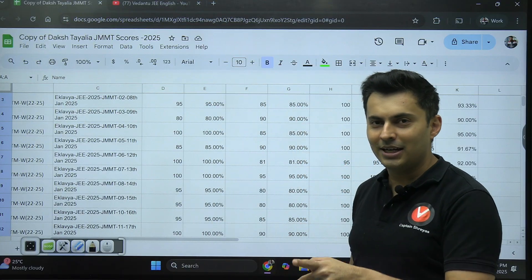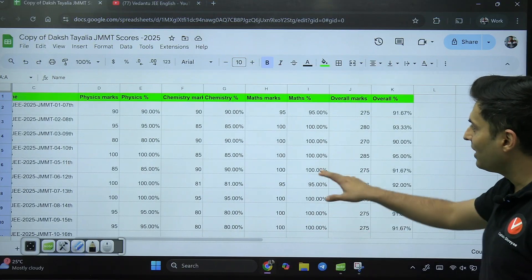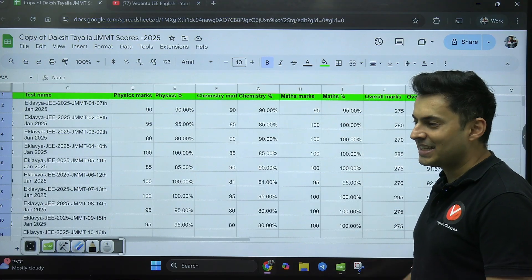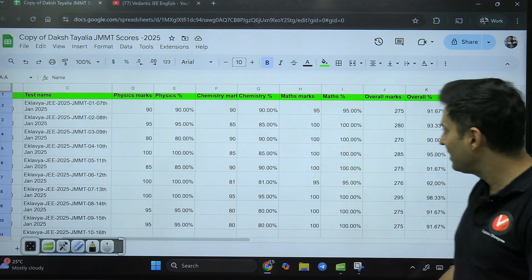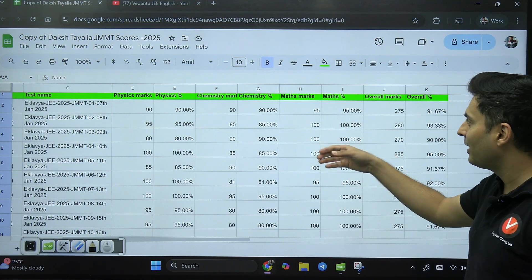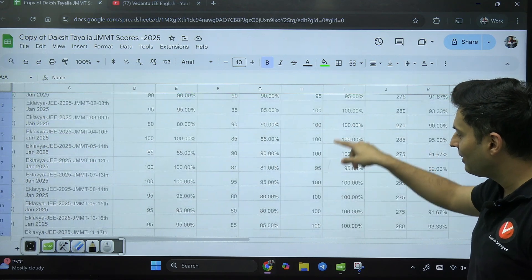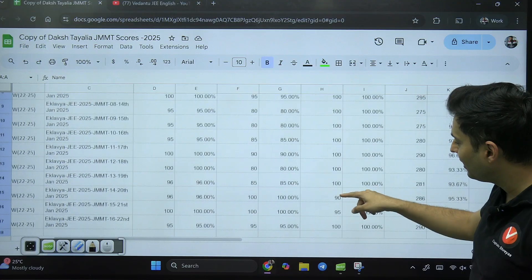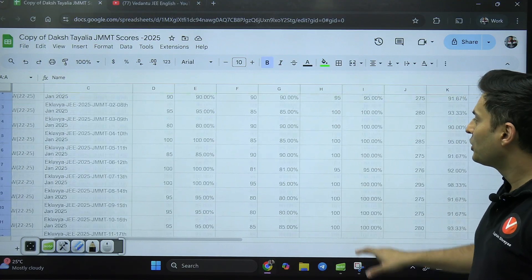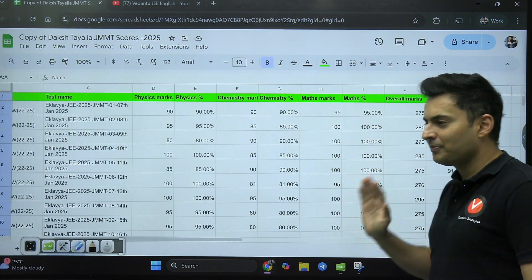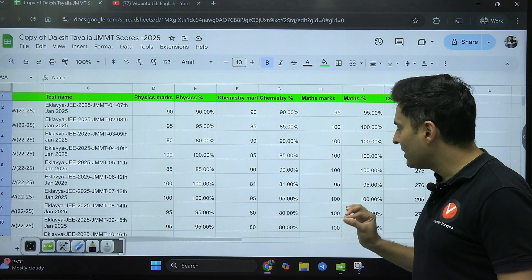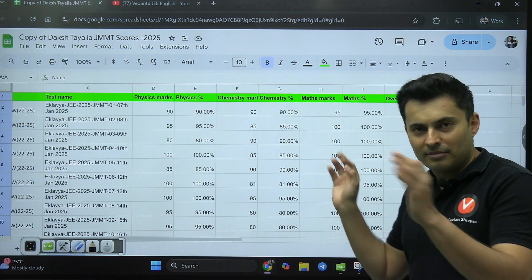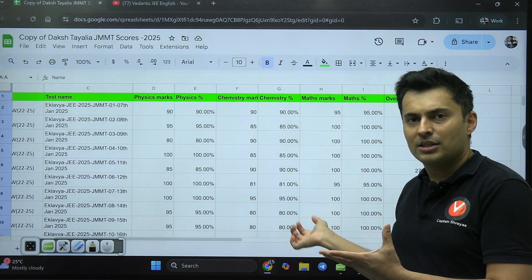If you notice the Physics marks—90, 95, 80, sometimes 85, 100, 95, 96, 96, 100—Physics marks are medium only. It's high, but I'll tell you why it's medium: if you look at the Math scores, you'll see a very nice score, really amazing.